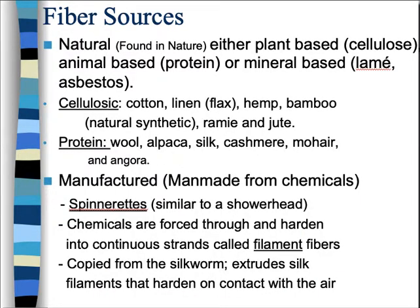Fiber sources: fibers come from a bunch of different sources — from natural sources and from chemical sources. When we say a natural source, we mean that it's found in nature essentially the way that we use it. It can be either plant-based, which we call cellulose; animal-based, which we call a protein; or mineral-based, which would be something like lamé or asbestos. Those are examples that we use or did use regularly and that were made out of minerals.